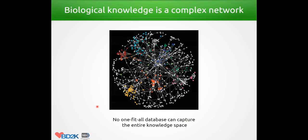Biological knowledge is a complex network, probably similar to a graph where each node represents any defined biological entity — like genes, variants, diseases, proteins, or drugs — all connecting to each other to form a complete whole scope of our biological knowledge. As a task for the bioinformatician, how do we store all this knowledge and put it into a queryable interface for the biologist? Clearly, there's no one-fit-all database that can capture the entire knowledge space.